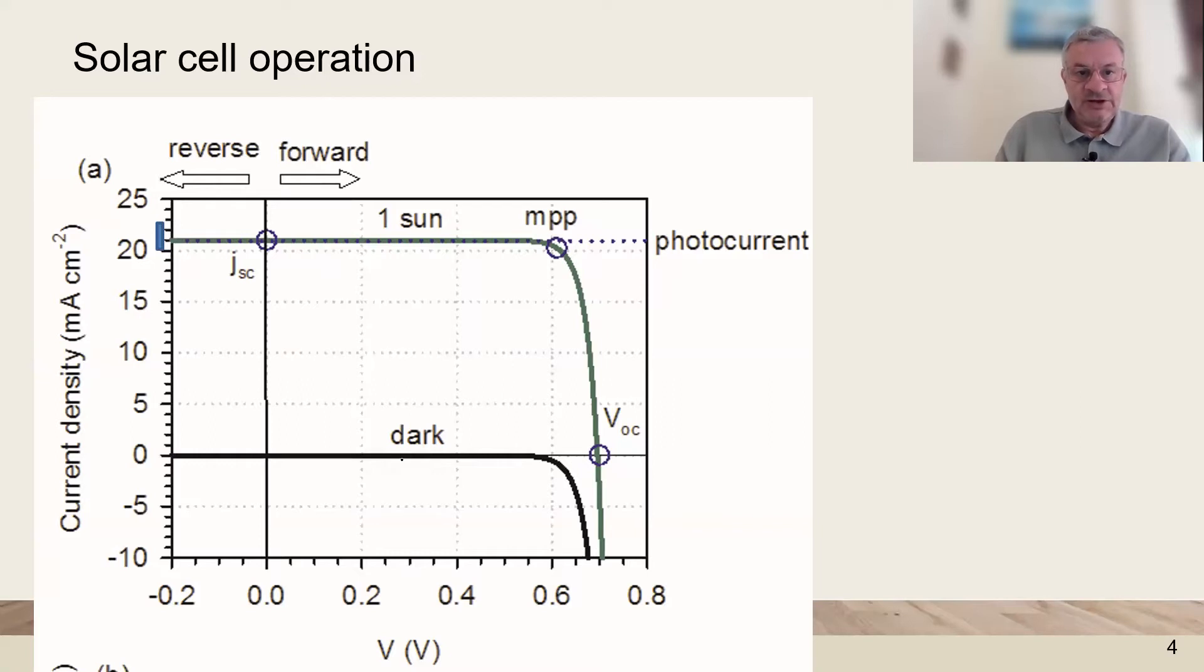The diode equation in dark shows an onset of recombination that becomes exponential, and with the added current we obtain a region of nearly constant current and then it goes down when the recombination current sets in.